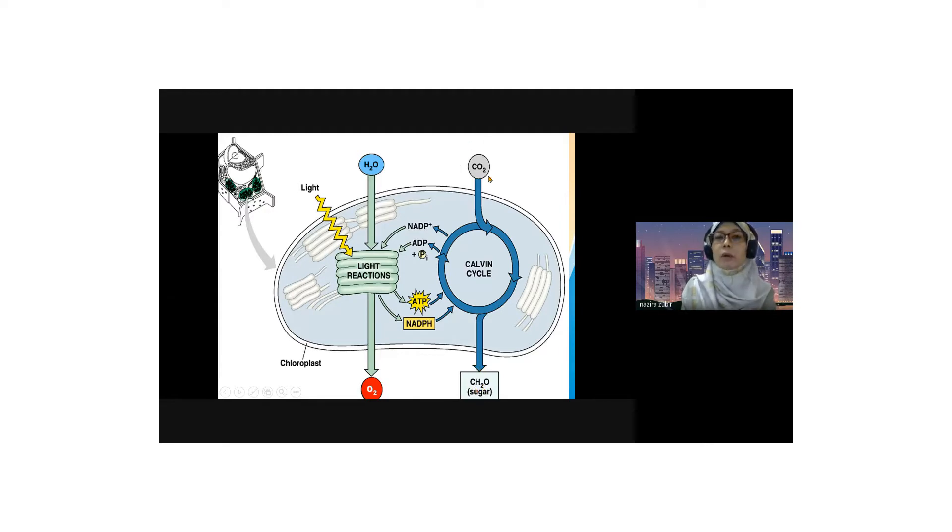It requires about six molecules of carbon dioxide entering the Calvin cycle, apart from using the 18 ATPs and 12 NADPH. The NADPH acts as the reducing agent. From the dark reaction, it produces the oxidizing agent NADP+ and ADP with phosphate for ATP synthesis.